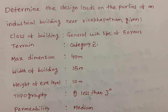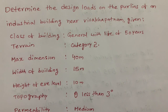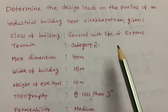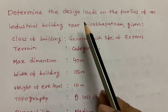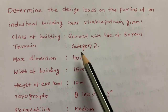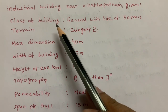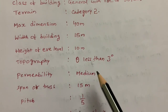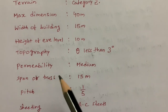Hello everyone. In this video I'll explain design loads on the purlins of an industrial building near Visakhapatnam — that is, how much load is acting on purlins. As per the given data, the class of building, terrain, maximum dimensions, width of building, height of the level, and permeability are all provided.